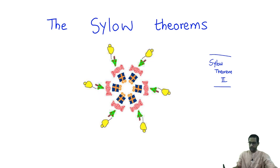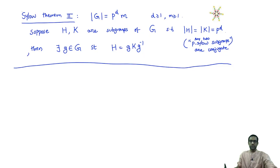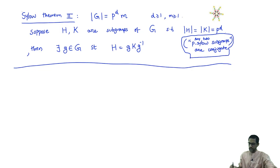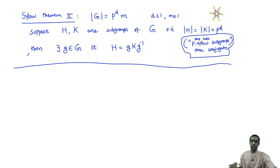Today we will prove the second Sylow theorem. It says that any two P-Sylow subgroups of a group G are conjugates of each other. More precisely, if we write the cardinality of G as P^D times M, and H and K are two subgroups of G whose cardinalities equal P^D — the maximum power of P dividing the cardinality — then we can find a group element G such that H equals GKG inverse. In other words, H and K are conjugates of each other.